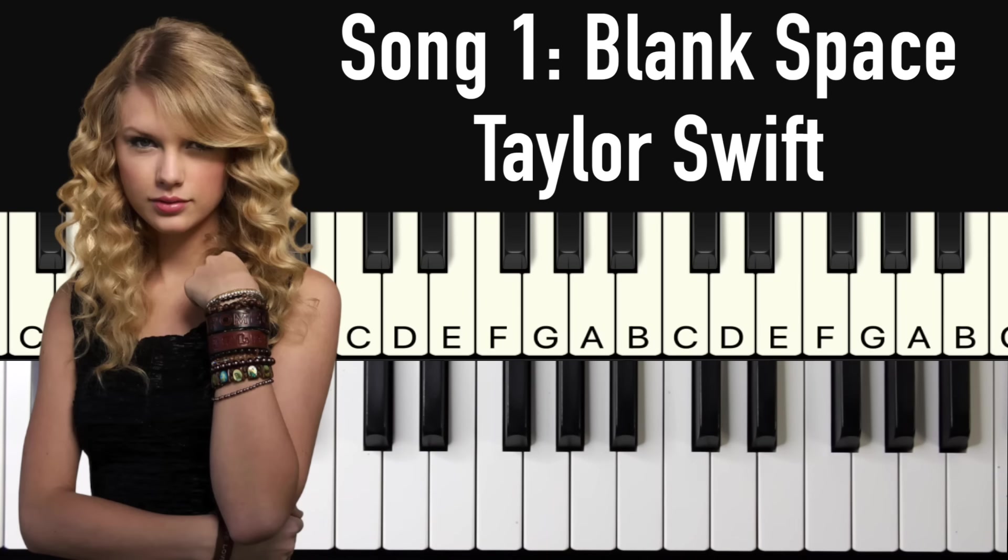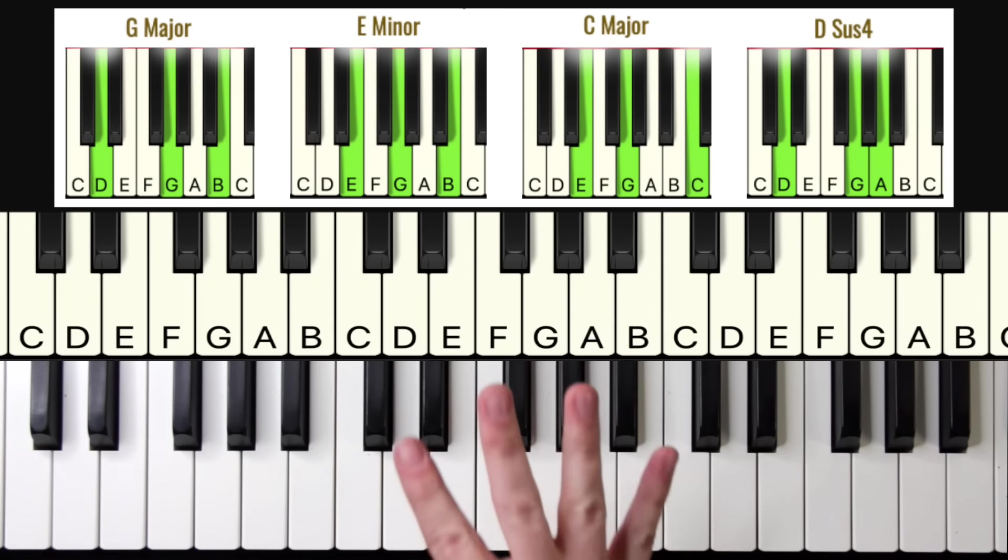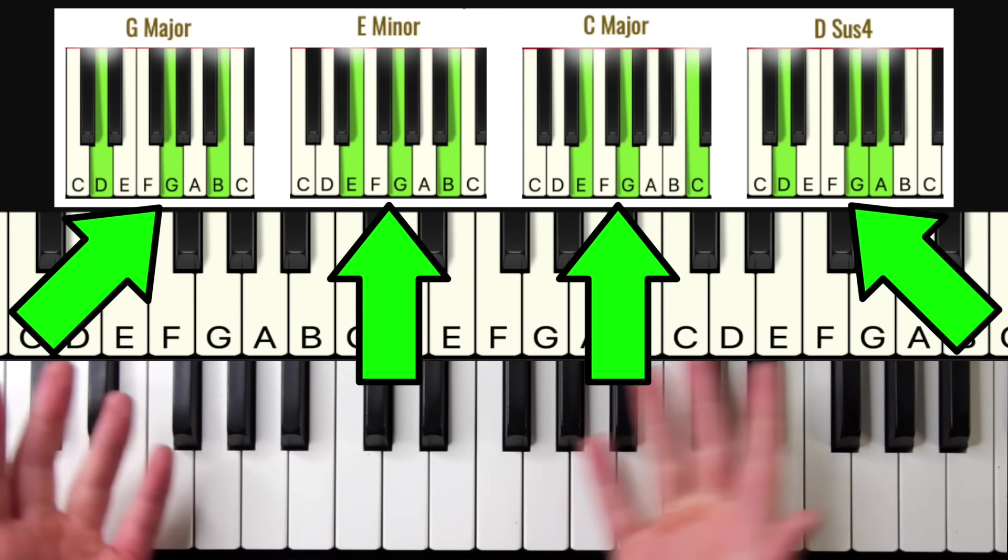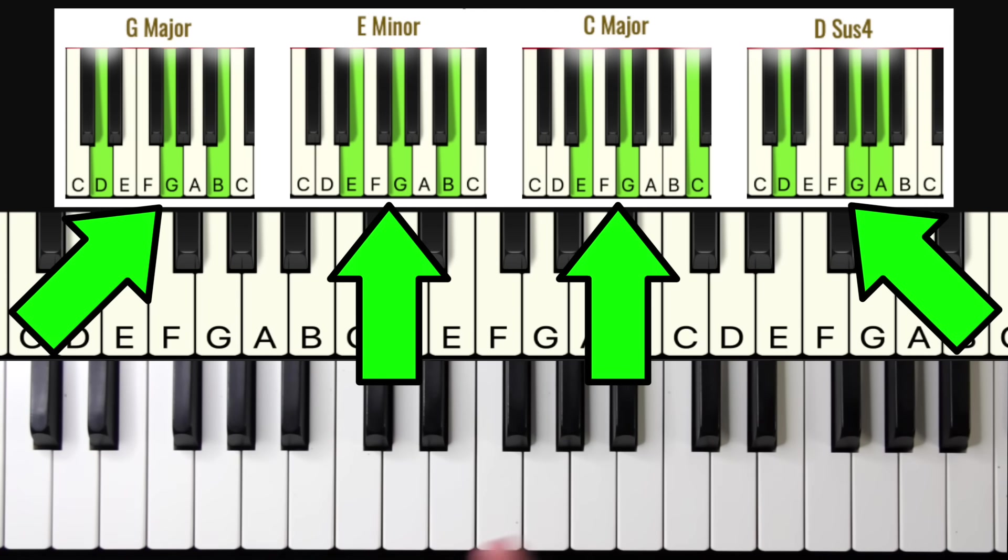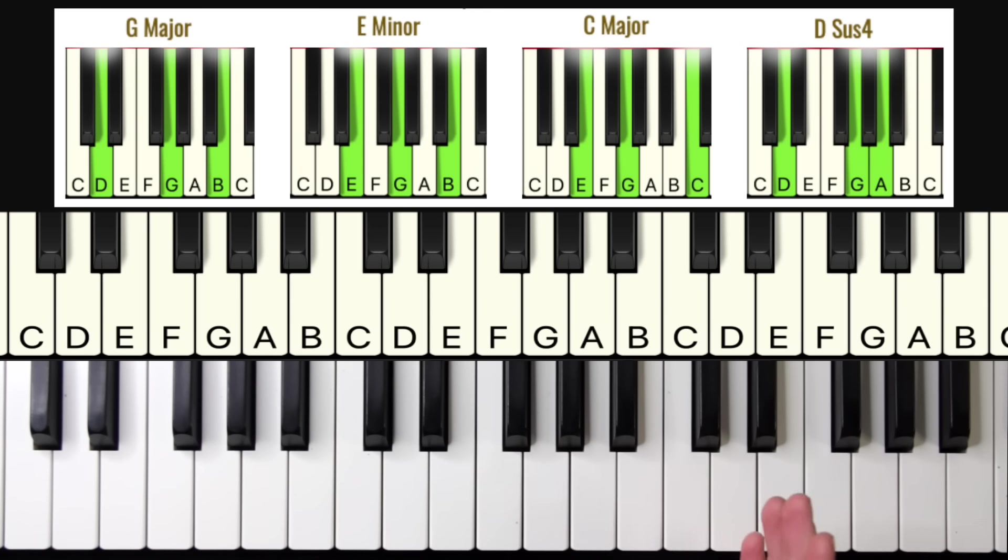This one is perfect for beginners. So for this song, instead of using complicated sheet music, all you got to do is learn these four chord shapes up here. You just copy and paste them onto the piano super easy. So the first chord shape we got is a G major chord.